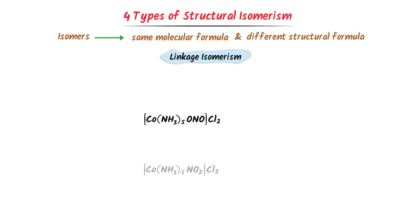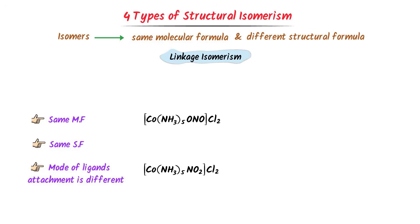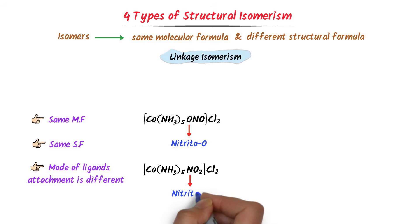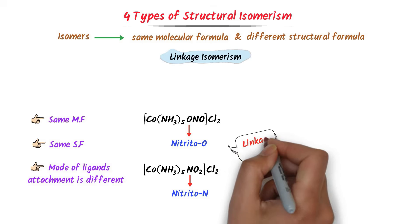Consider two coordination compounds that have the same molecular formula and same structural formula, but the mode of ligand attachment is different. In the first coordination compound, the donor atom is oxygen (nitrito-O), and in the second coordination compound, the donor atom is nitrogen (nitrito-N). Such isomers are called linkage isomers.